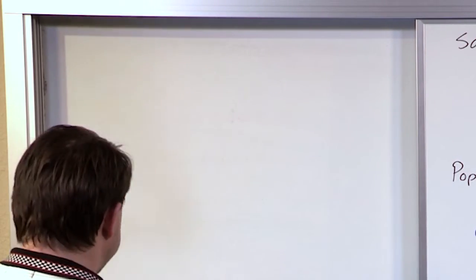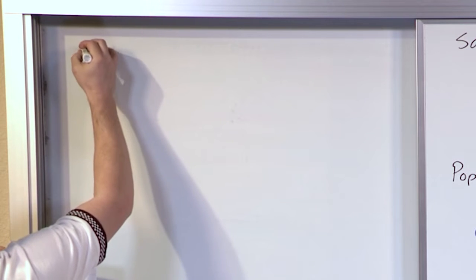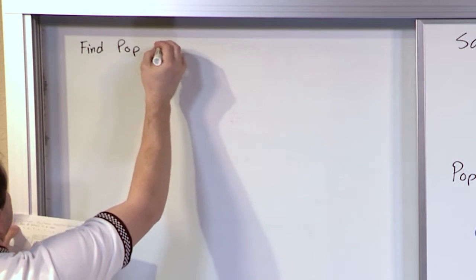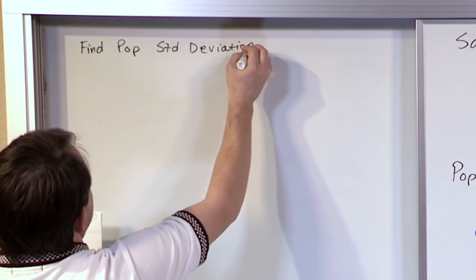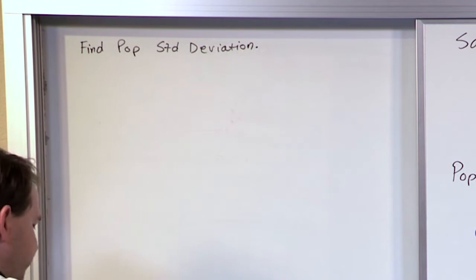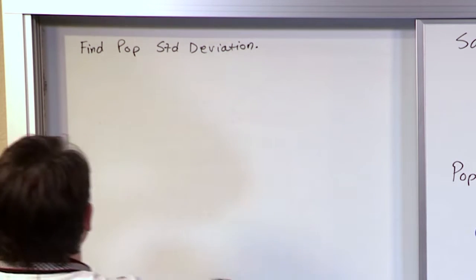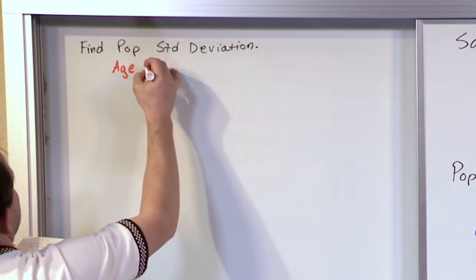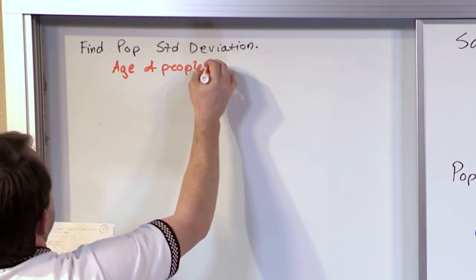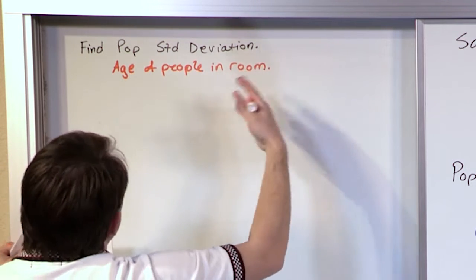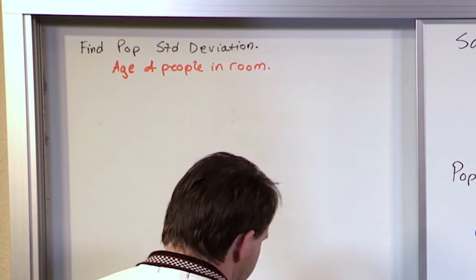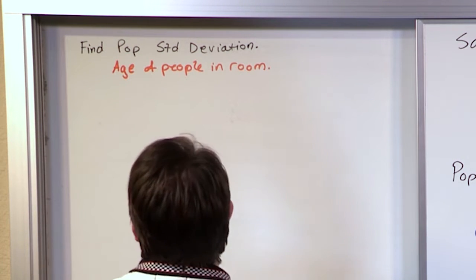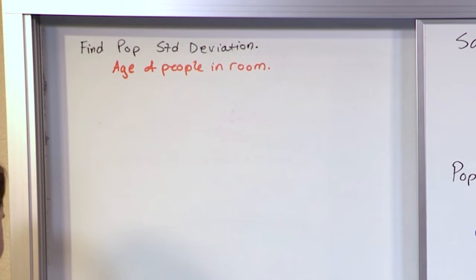So let's go ahead and do one of these for real. Let's find the population standard deviation — STD means standard deviation. In this particular case, we might have a data set which is the age of people in a room. Let's just pretend that the population is everybody in this room. I know that's not practical — that's not typically what you're doing in real life — but let's just pretend that the ages of these people are the entire population of everybody we care about.